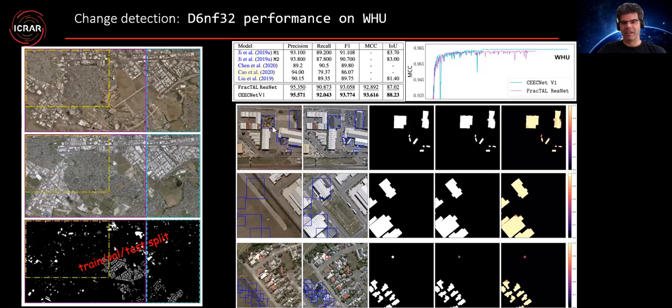And we should be doing actually worse in comparison with these split areas here. Again, here you can see input date one, date two, ground truth, prediction, and confidence heat map for the Cygnet model.